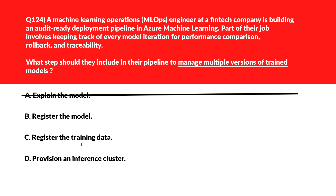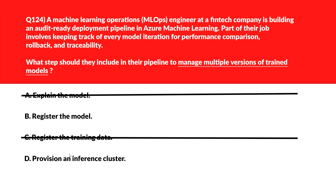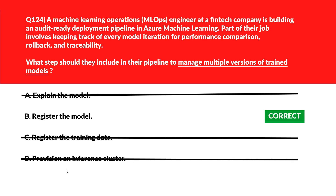Option C is Register the Training Data — this stores input datasets, not trained model versions, so it's the wrong choice. Option D is Provision an Inference Cluster — this prepares infrastructure for deployment but doesn't support version control of trained models — incorrect. We'll lock option B, Register the Model, as the right answer.